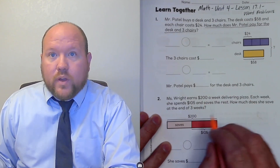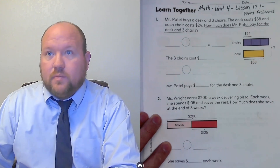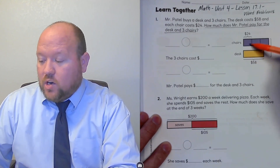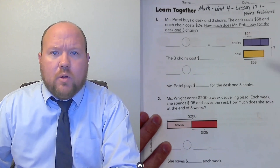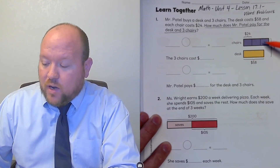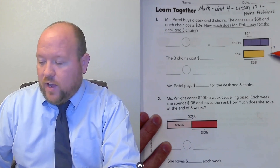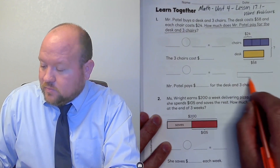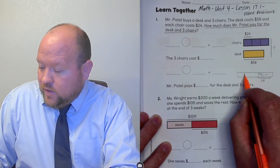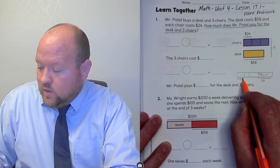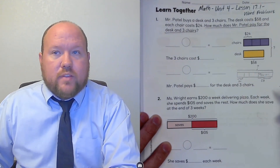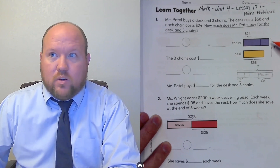Next, we need to figure out what we need to solve first. They've already drawn the model for us. Notice here they have the desk listed as $58, three chairs at $24, and we're looking for the total. You'll notice they're using a comparison bar model instead of a part-whole model — either one is fine. You could draw this model showing $58 for the desk and three equal parts of $24, looking for the total. Either the book's model or a part-whole model will work.